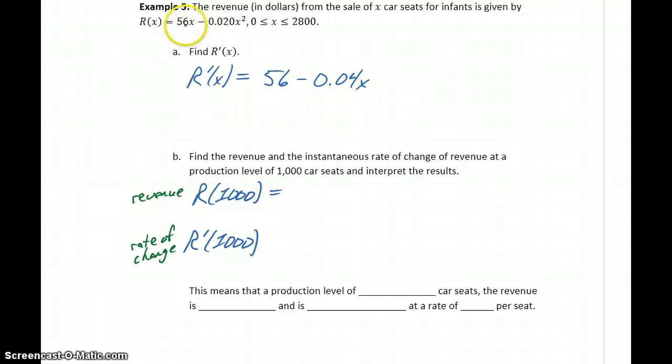First we would type in the original function, ask Wolfram Alpha to evaluate that at x equals 1,000. That should give us a result of 36,000. Then you would ask Wolfram Alpha to evaluate our derivative function at x equals 1,000. That should give you a result of 16.